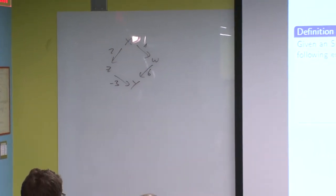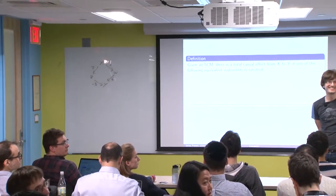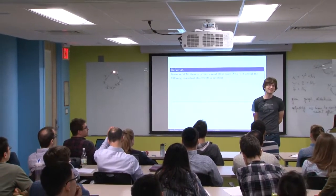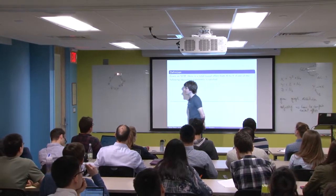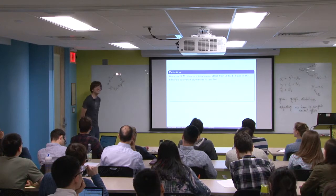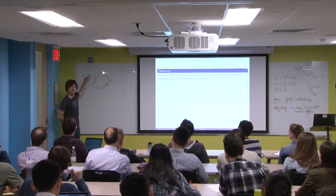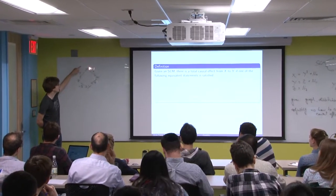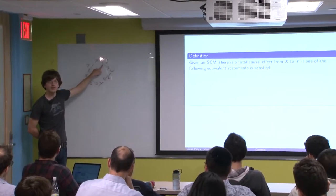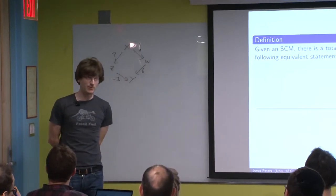A student asks: this never happens, right? That's a very good question. There is a notion of a generic situation - it has a name, it's called faithfulness. We should have a small discussion about how strong this assumption is. If you put a density on the edge coefficients, then the situation where two paths cancel each other out happens with probability zero.